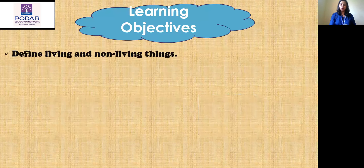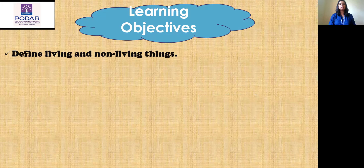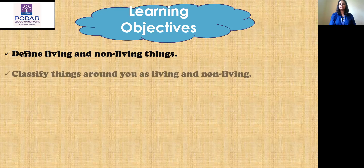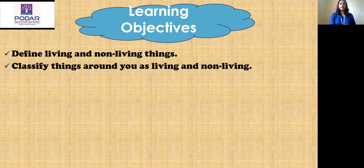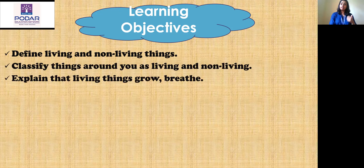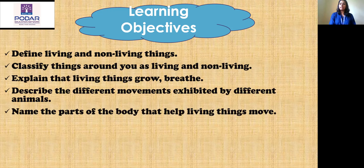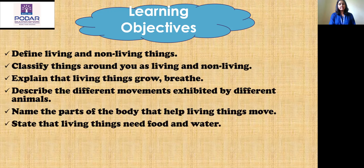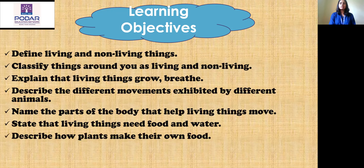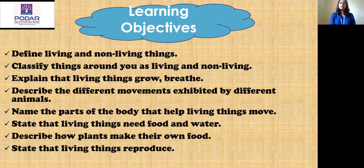Before that, we should know what we are going to learn in this chapter and what are the learning objectives. In this chapter, we are going to learn about what are living and non-living things, classifying things around you as living and non-living, explaining that living things grow and breathe, describing different movements of animals, naming body parts that help living things move, stating that living things need food and water, describing how plants make their own food, and stating that living things reproduce.